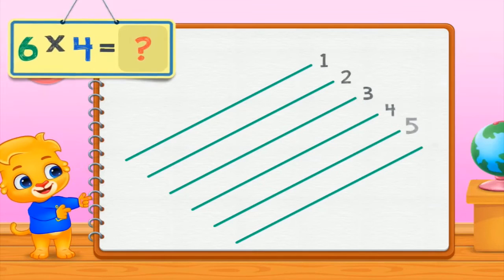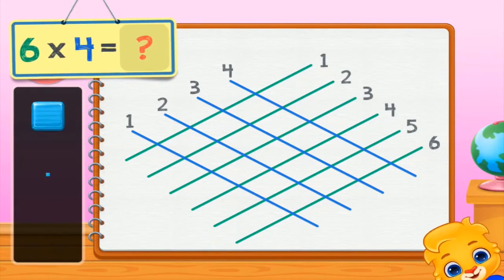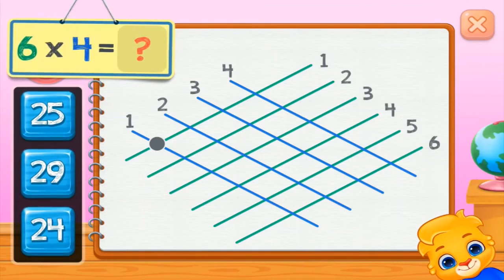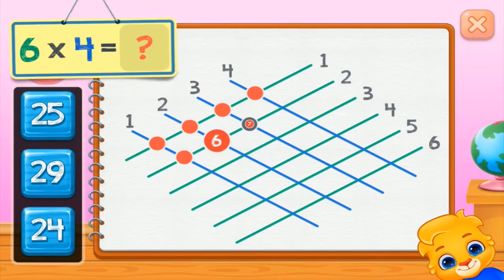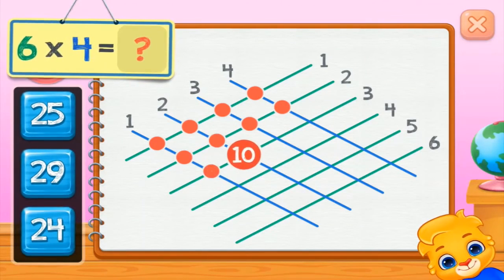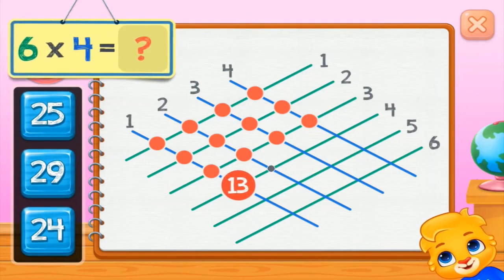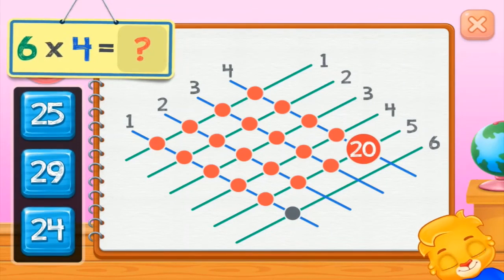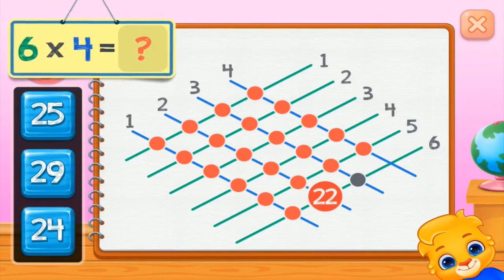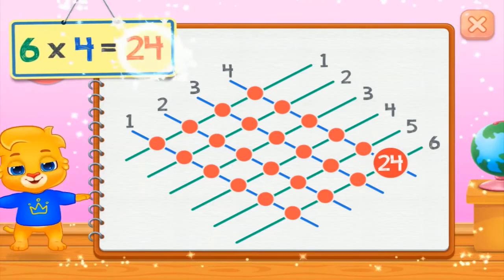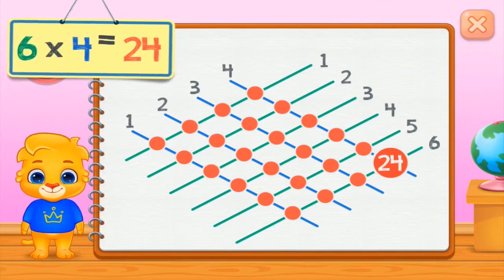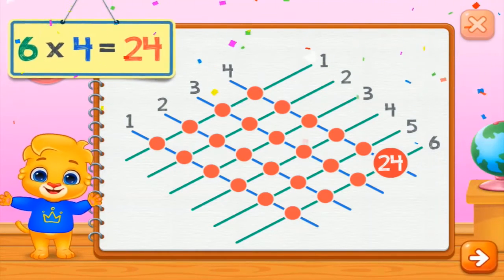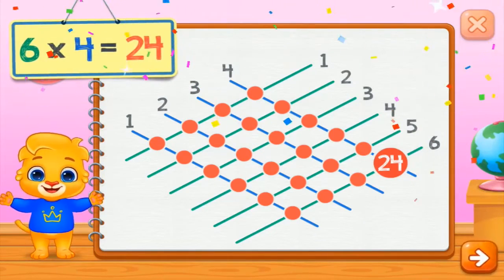Six times four equals... one, two, three, four, five, six, seven, eight, nine, ten, eleven, twelve, thirteen, fourteen, fifteen, sixteen, seventeen, eighteen, nineteen, twenty, twenty-one, twenty-two, twenty-three, twenty-four. Six times four equals twenty-four.